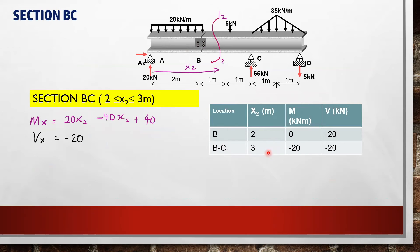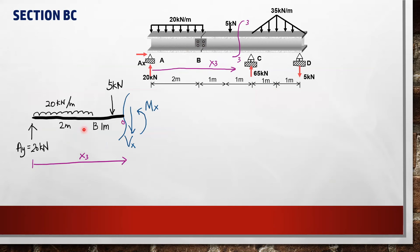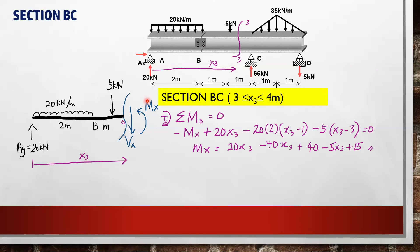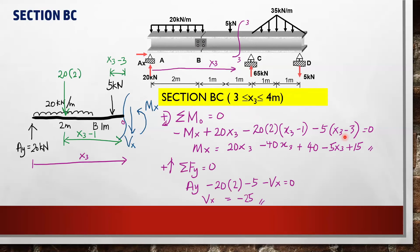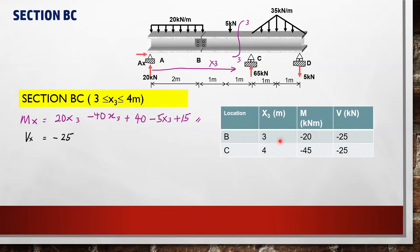Since Vx is a constant value for this section, there is no inflection point for the bending moment. For cut section 3-3, x3 starts from A and section BC has a range from 3 to 4 m. The distance from the 5 kN load to O is x3 − 3. This gives us the steps to determine the moment and shear at locations 3 m and 4 m from A.